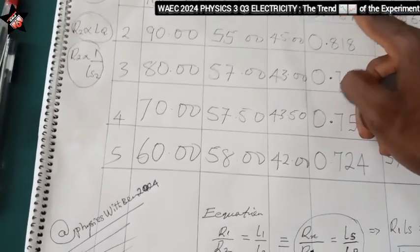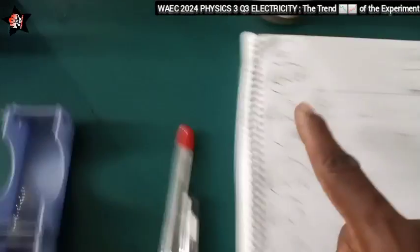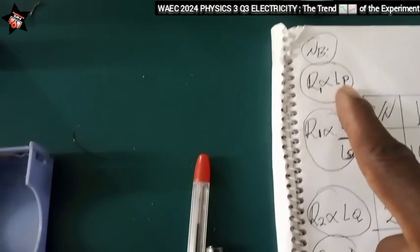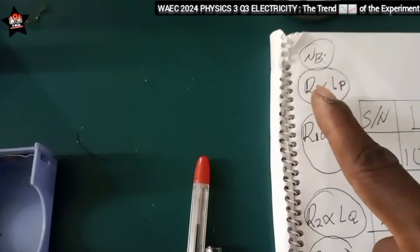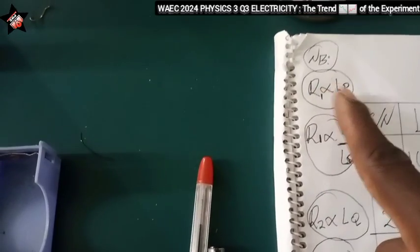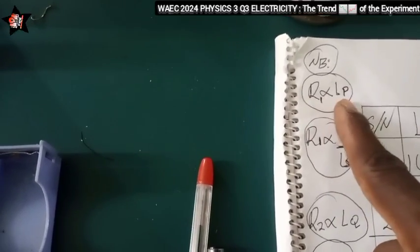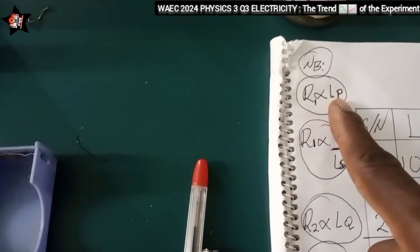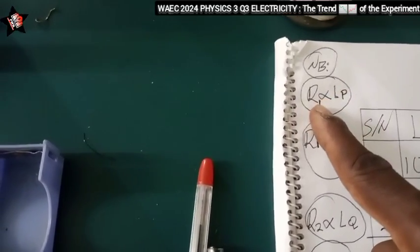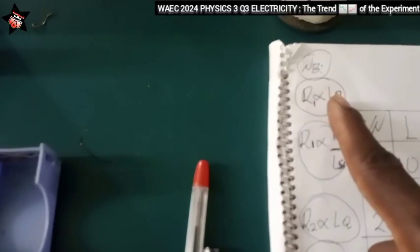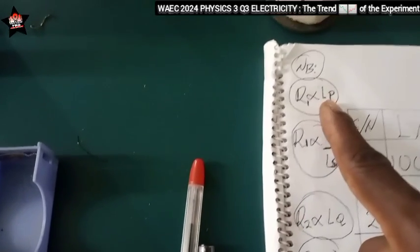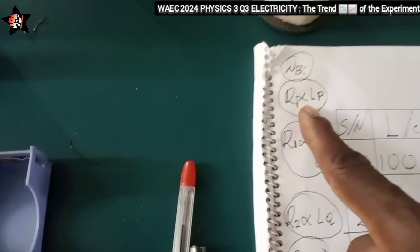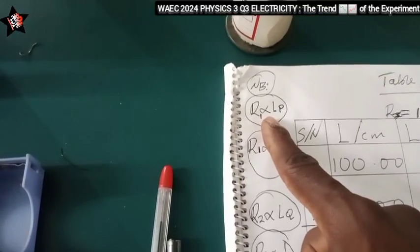It means that R1 and Lp they have a direct relationship that is decrease-decrease or increase-increase. So if R1 is decreasing, Lp will be decreasing. If Lp is decreasing, R1 will be decreasing. And that is the relationship the length of the wire and the resistance have.